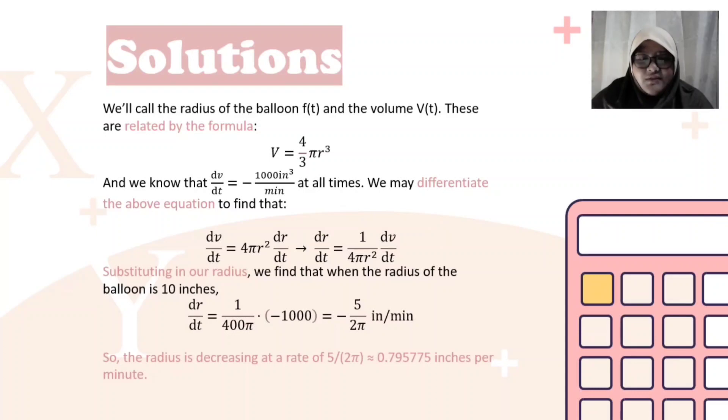We may differentiate the above equation to find that dv/dt is equal to 4πr² times dr/dt, similar to dr/dt is equal to 1/(4πr²) times dv/dt.